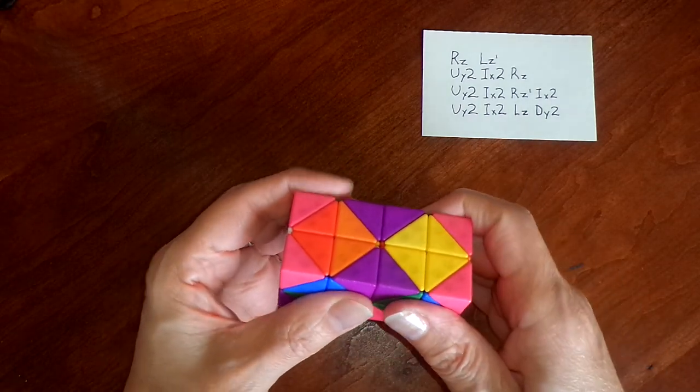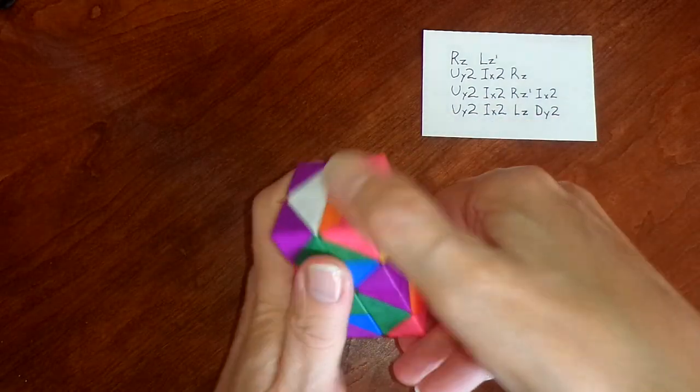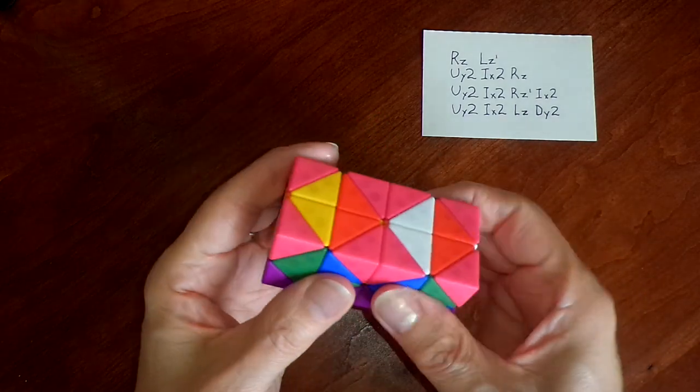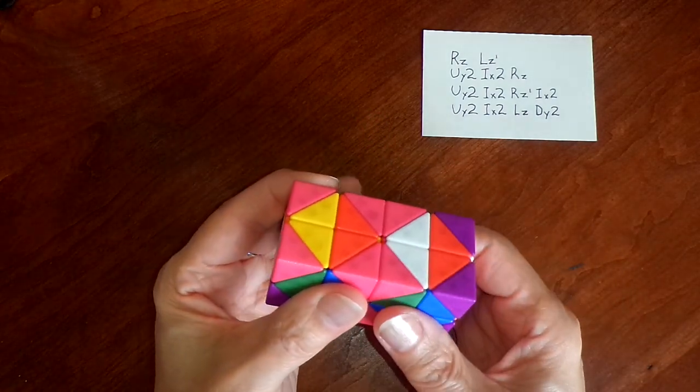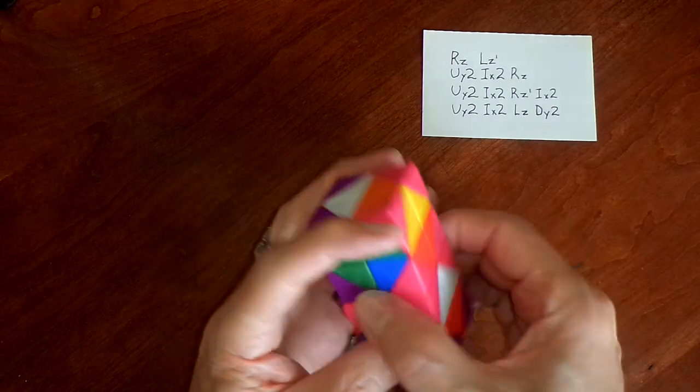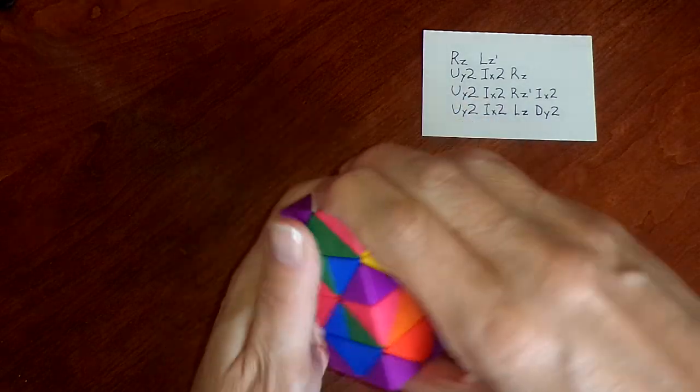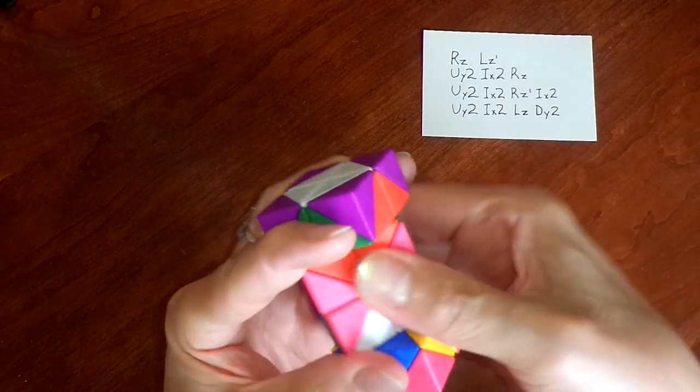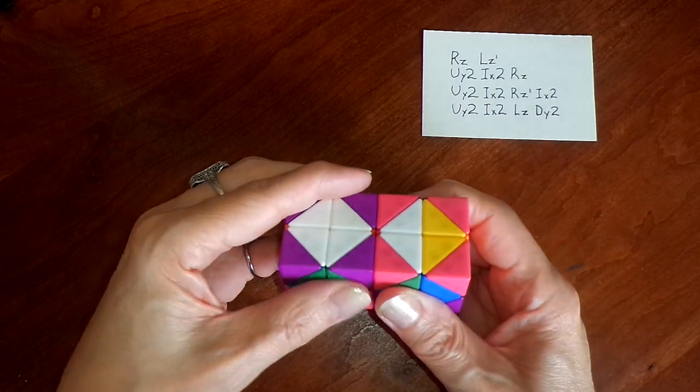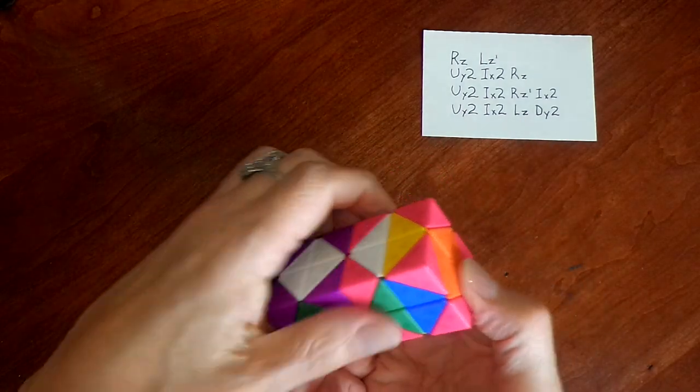Right z. Right z prime, putting it back. And finally, ix2 up in left z and down y2.